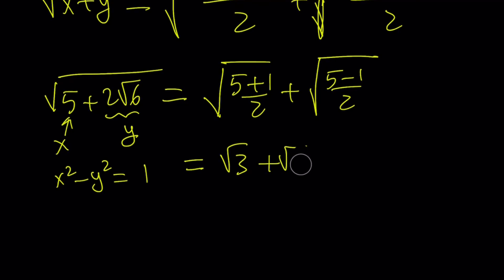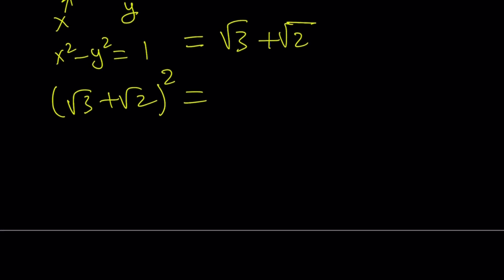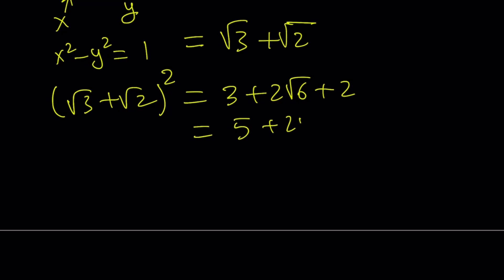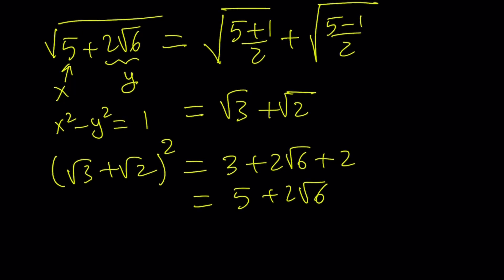So if you go ahead and square the expression square root of 3 plus square root of 2 — sometimes I go too fast, so I need to slow down — from the binomial theorem, you get 3 plus 2 root 6 plus 2, which is equivalent to 5 plus 2 root 6. That makes sense because we took the square root of 5 plus 2 root 6, it gave us root 3 plus root 2, and squaring that gets us the original expression under the radical.